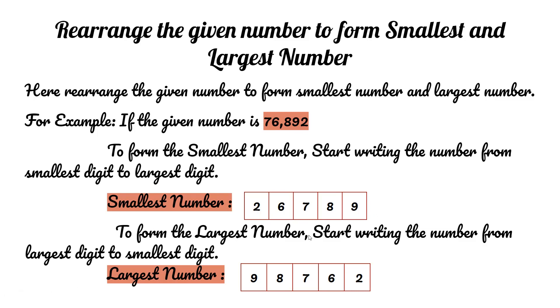To form the largest number, start writing the number from largest digit to smallest digit. So first, we have to find the largest digit, which is 9, then 8, then 7, then 6, then 2. So the largest number is 98,762.